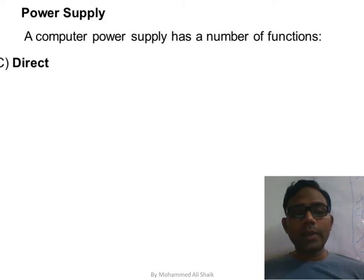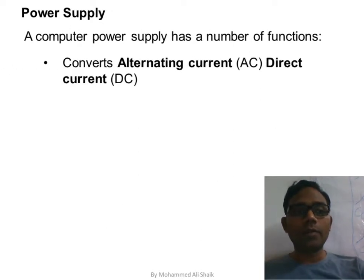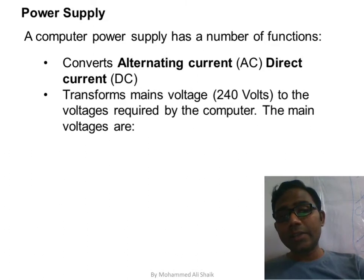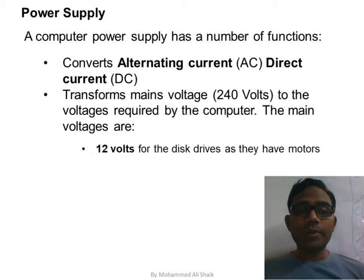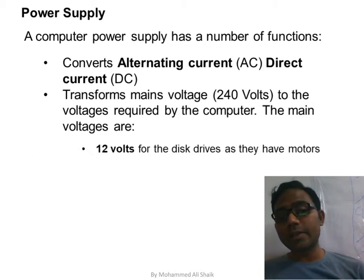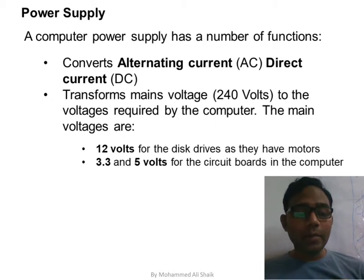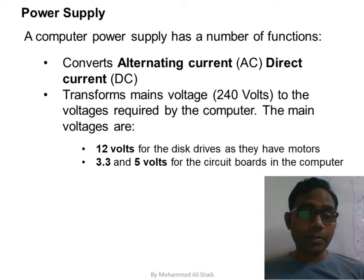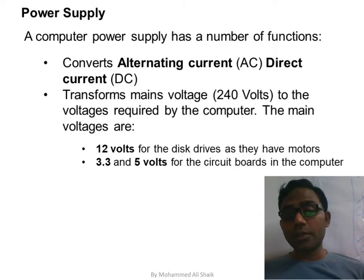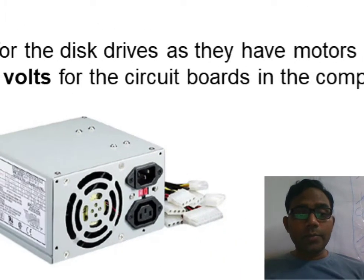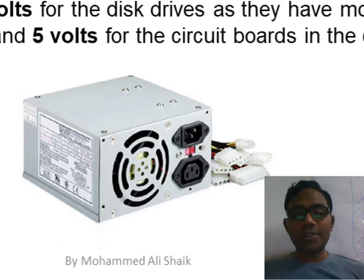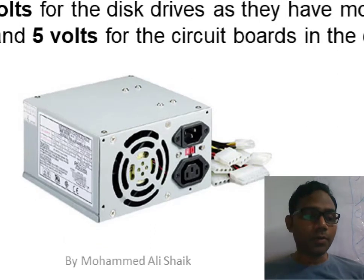The computer power supply converts AC (alternating current) to DC (direct current) and transforms voltage from 240 volts to what the computer requires: 12 volts for disk drives (which have mechanical parts), and plus or minus 3.3 volts and 5 volts for circuit boards. This is the SMPS (Switch Mode Power Supply) located at the back of the CPU.